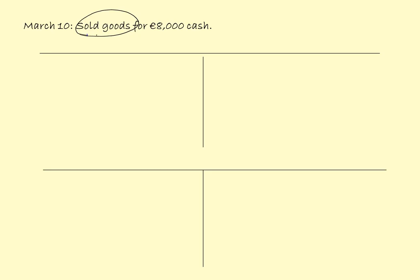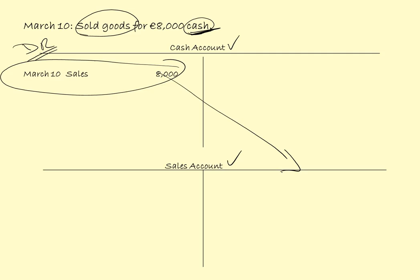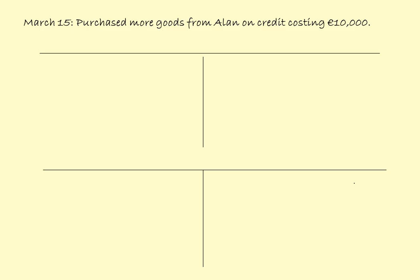March the 10th: sold goods for 8,000 cash. Sold goods goes to sales, and we need a cash account. So we have two new accounts: cash account and sales account. We're selling goods and receiving cash — money coming in, so you always debit the account. We debit the cash account and credit the sales account — you'll always credit the sales account. On the credit side of sales: March the 10th, Cash, 8,000.